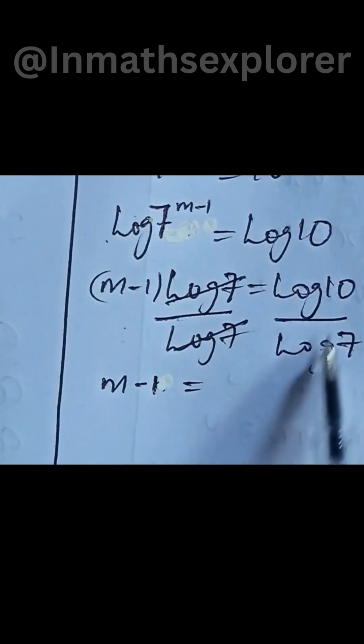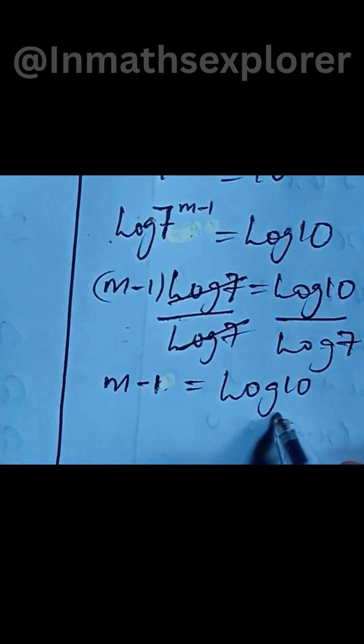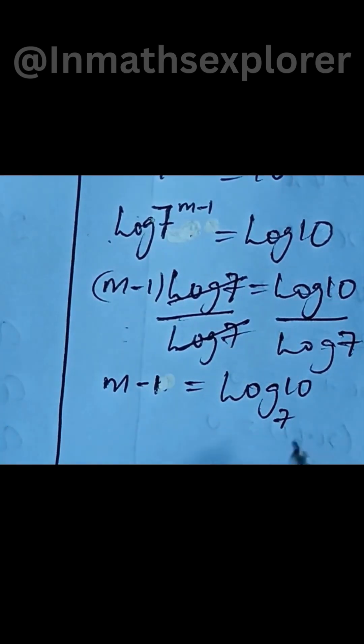Then we can simplify the right hand side. Now let's add 1 to both sides.